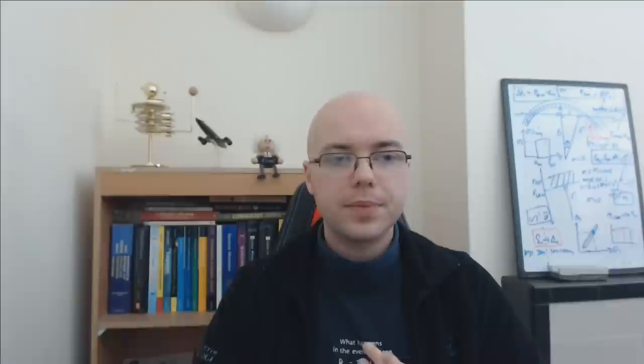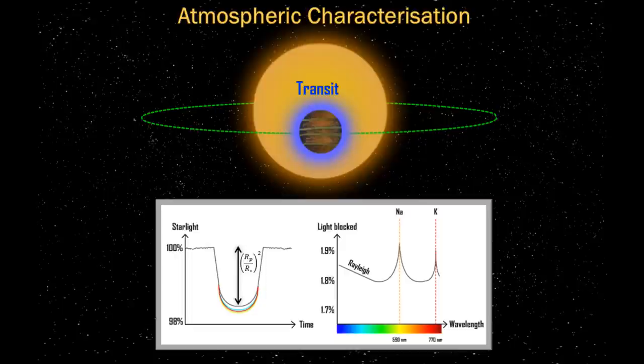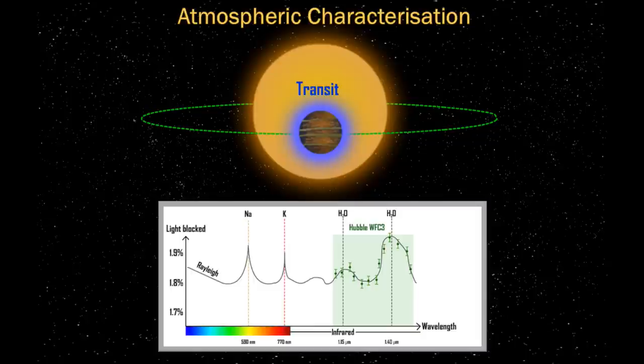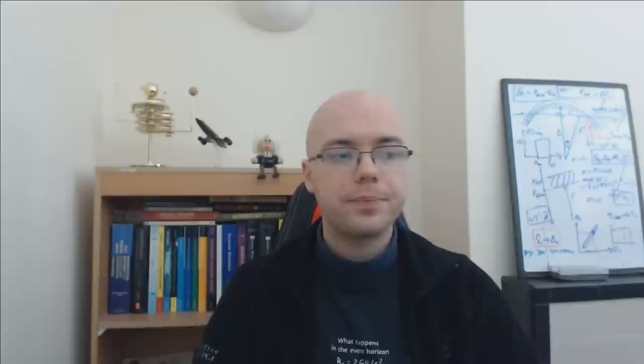Another question about spectroscopy of exoplanets: does this only work in the visible wavelength range? In the visible, transmission spectroscopy can already detect atomic species like sodium and potassium. In the infrared, that's where we get molecular features such as water, methane, and potentially carbon dioxide. You can also push to even shorter wavelengths, moving into ultraviolet light, which can potentially tell you about atmospheric escape processes, photochemistry, and highly ionized metal ions high up in the atmosphere.